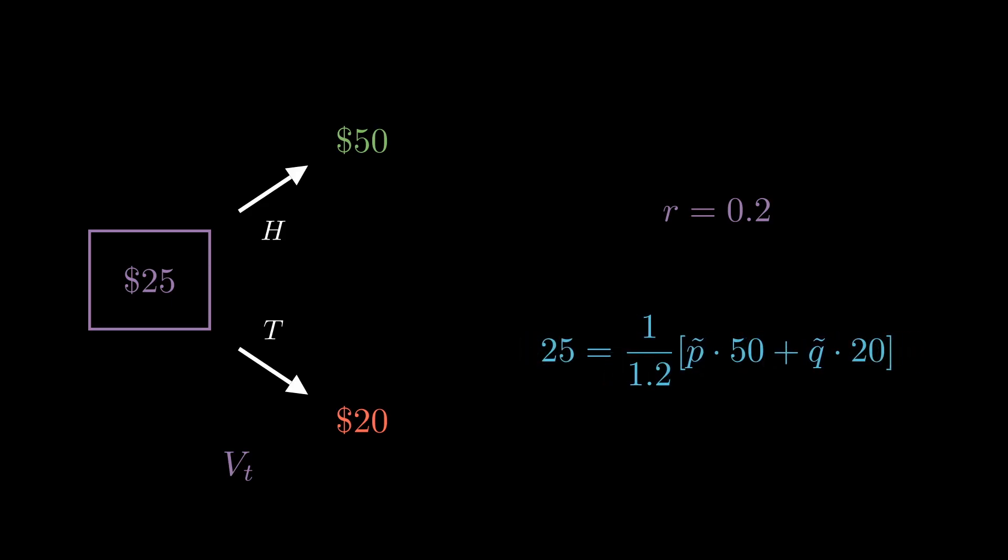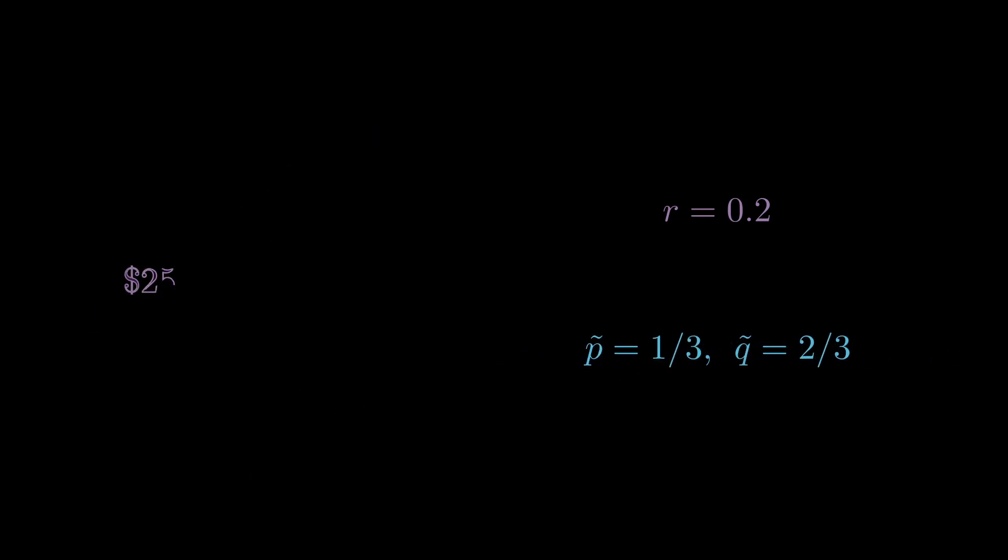Plugging in the payouts as well as the price, using the fact that there are only two different payouts, we get our risk-neutral probability measures. These are not likelihoods. We are not saying that the probability of getting heads is one-third and the probability of tails is two-thirds. We are just simply mapping heads and tails to one-third and two-thirds.